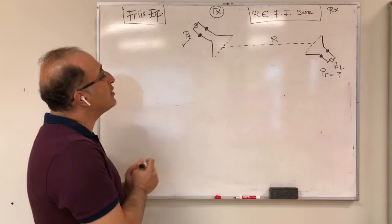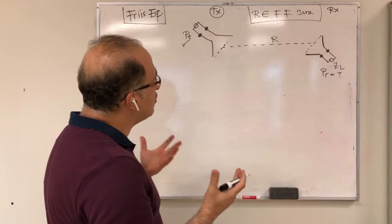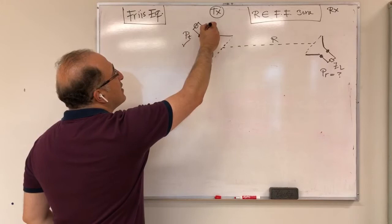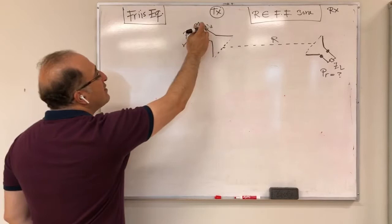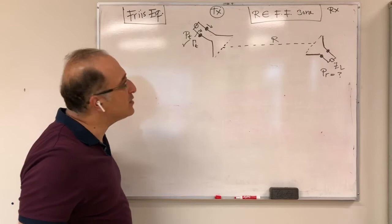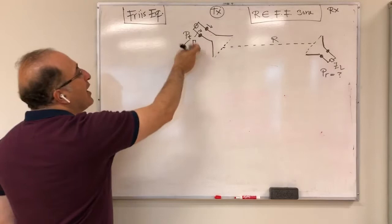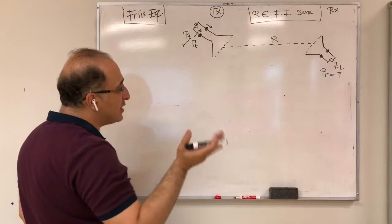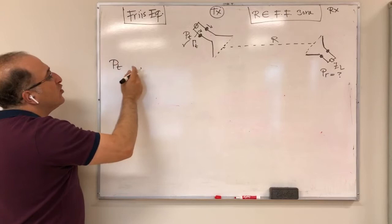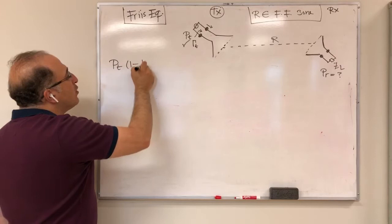Let's start deriving the Friis equation. First, P_T needs to enter the antenna, but there is a reflection coefficient gamma_T at the port. If gamma_T is zero, all power goes through. Otherwise, gamma_T² reflects back, and (1 − gamma_T²) goes into the antenna. So P_T·(1 − gamma_T²) is the power that enters the antenna.